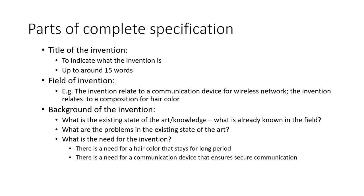The next important aspect of a complete specification is the background of the invention. This is the portion where you build up a background behind why the invention was required. Here you explain what the existing state of the art or existing technology is in the related field — for example, what existing communication devices are already known, what are the drawbacks in those devices, and how you built upon that to make your invention. The background defines the need for your invention.